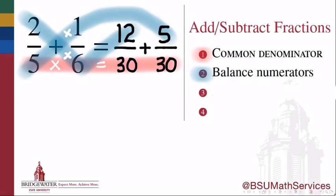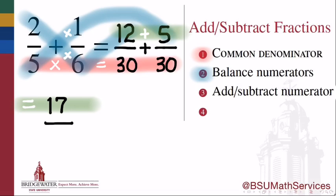Now that our denominators are the same and our numerators have been balanced, we're ready to add or subtract, whichever is appropriate for the problem. When we do that, we add only the numbers in the numerator, keeping the denominator the same. So I'll add 12 plus 5 and get a numerator of 17, keeping the denominator of 30, meaning that my sum is 17/30.